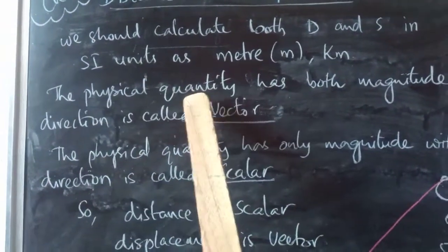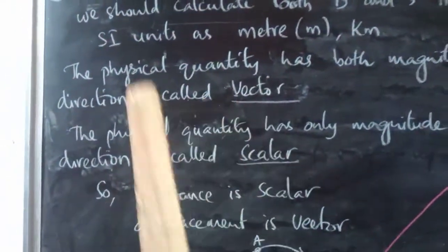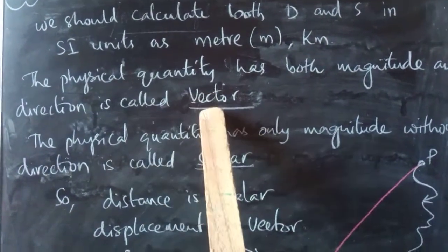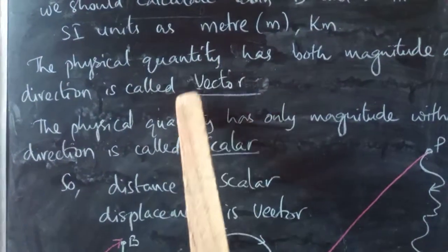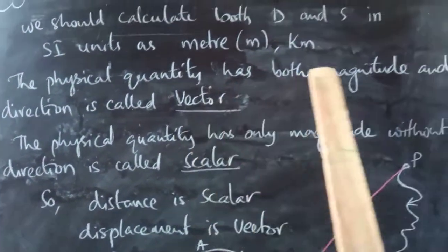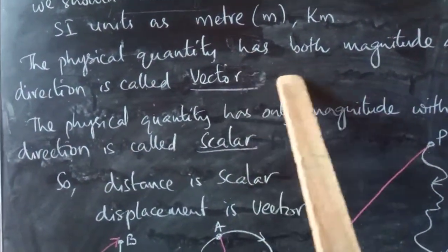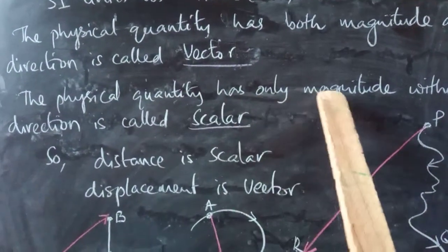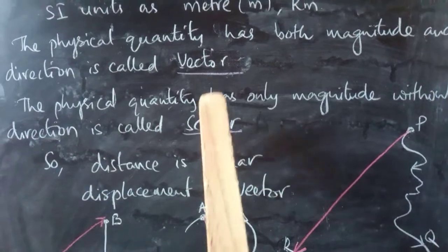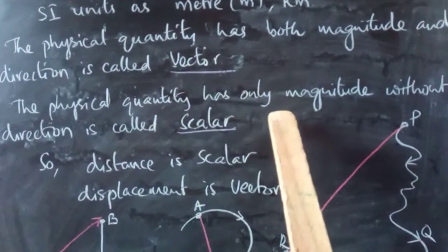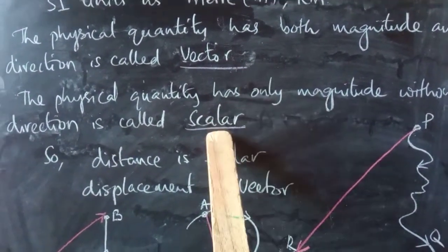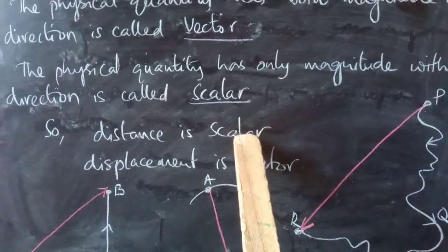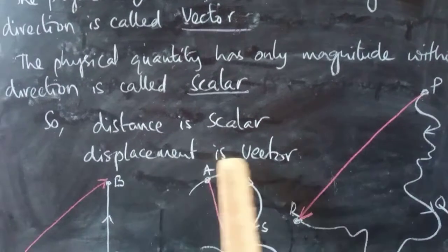Any physical quantity — not only distance and displacement, but any physical term — that has both magnitude and direction is called a vector. Physical quantities that are vectors are shown with an arrow mark. And any physical quantity that has only magnitude without direction is called a scalar. So distance is a scalar because it has no particular direction, only magnitude. Displacement has both magnitude and direction — it is called a vector.